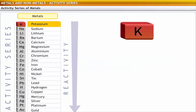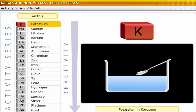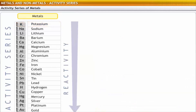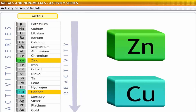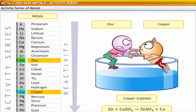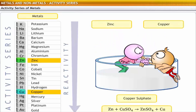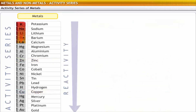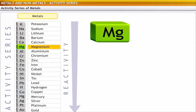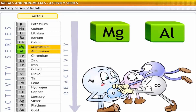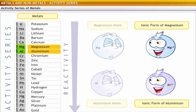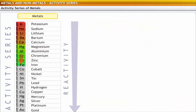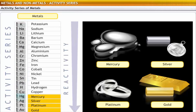For example, potassium at the top of the series is the most reactive among all the elements. For any two metals in the series, the metal placed higher can displace the other metal from its salt solution. For example, zinc displaces copper from copper sulfate solution to form zinc sulfate. As you move down the series, oxides of highly reactive metals like magnesium and aluminum are not reduced easily by hydrogen, carbon or carbon monoxide, because the ionic forms of magnesium and aluminum are more stable than their atoms.